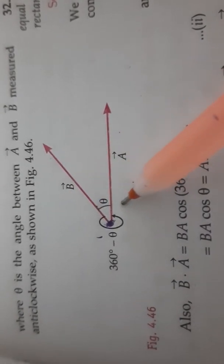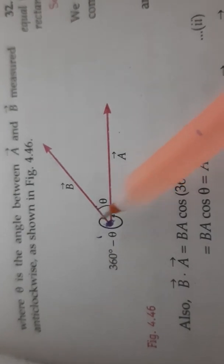If we have to consider A dot B then we have to consider this angle, but if we have to consider B dot A then we have to take this angle.